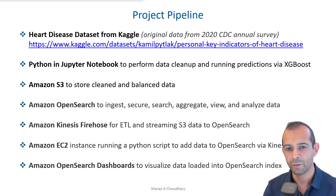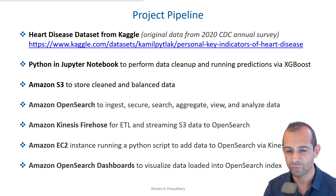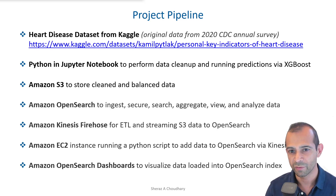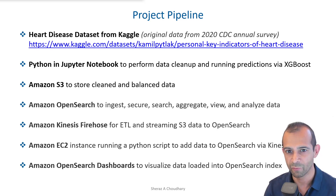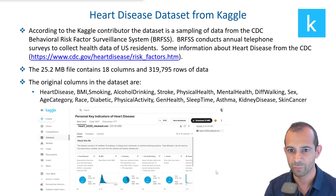Here is the project pipeline. The dataset is from Kaggle, Python running in the Jupyter Notebook for data cleanup, Amazon S3 for storage, Amazon OpenSearch for indexing, Amazon Kinesis Firehose for moving data from S3 to OpenSearch, an Amazon EC2 instance on which the Python script was running, and finally Amazon OpenSearch dashboards.